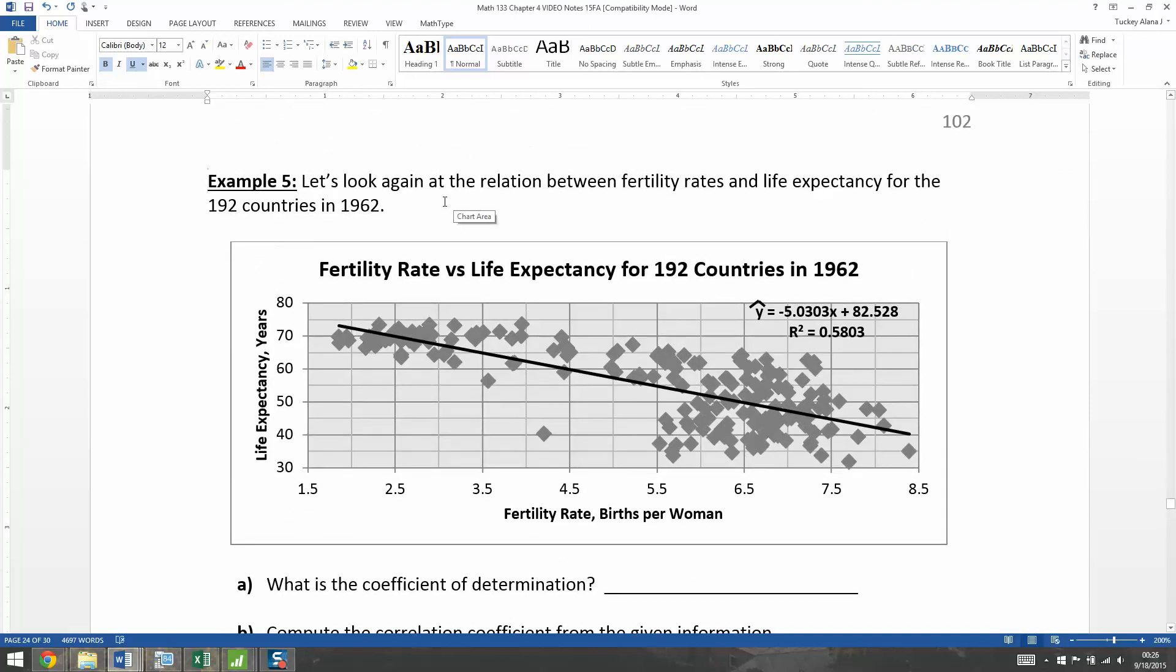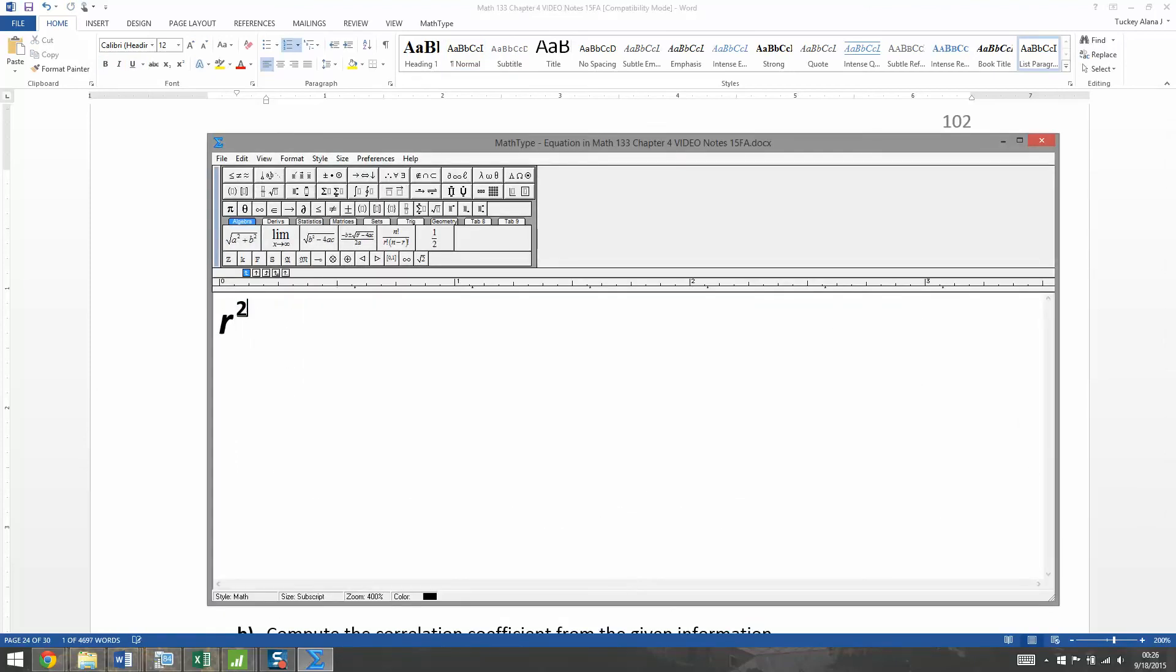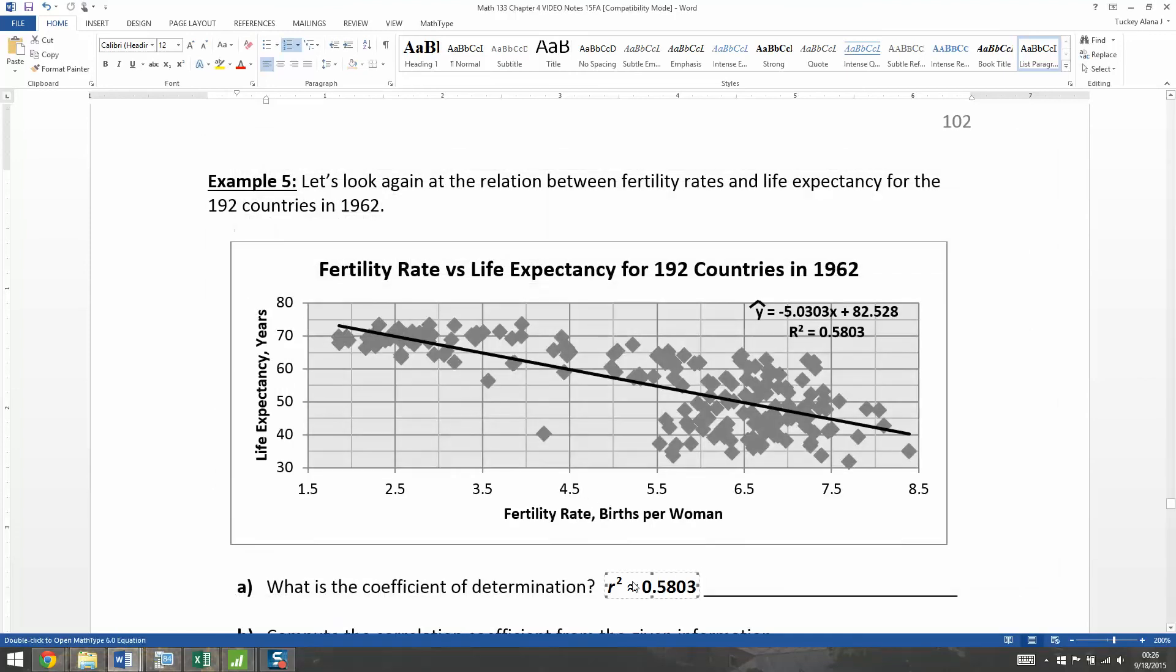So let's look at this one. This is the same problem that we've looked at a couple times. This is the fertility rate and the life expectancy for 192 countries in 1962. Now, the coefficient of determination is given to us, look, by Excel. It's right there. It's 0.5803. So that's what I'm going to say. R-squared is approximately, of course it's always approximate because these are rounded by the computer, 0.5803. And we're done.